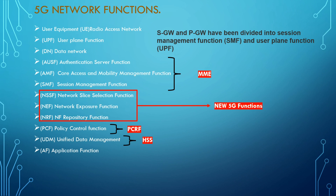The 5G network functions include: UE, RAN, UPF (User Plane Function), Data Network, AUSF (Authentication Server Function), AMF (Core Access and Mobility Management Function), and SMF (Session Management Function) — these three combined work as the MME. The new 5G-specific functions are NSSF (Network Slice Selection Function), NEF (Network Exposure Function), and NRF (NF Repository Function), which will be discussed separately.